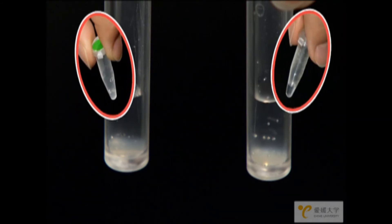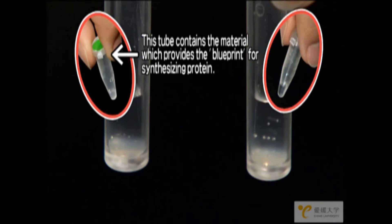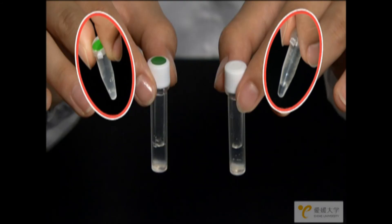There are two small tubes but one of them had the material that contains the blueprint for synthesizing the fluorescent protein. That was added to the tube with the green dot. It was not added to the other tube so the protein will not be synthesized.